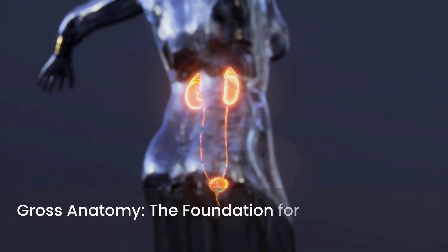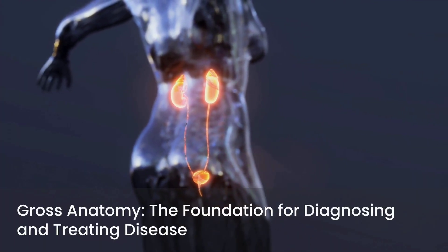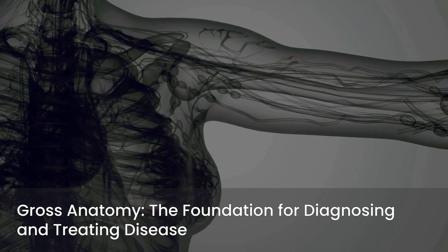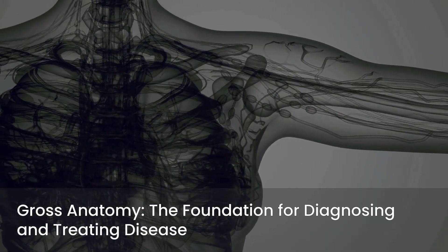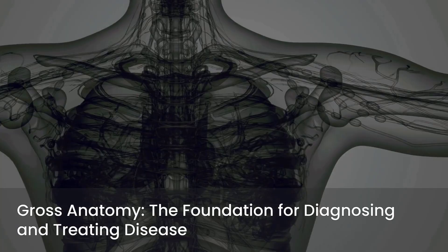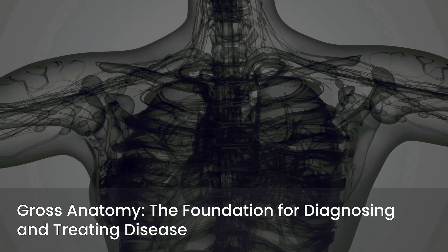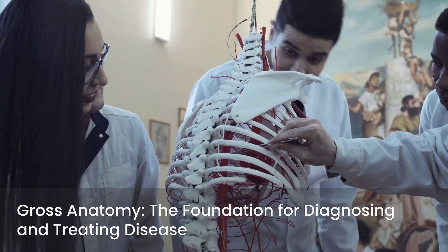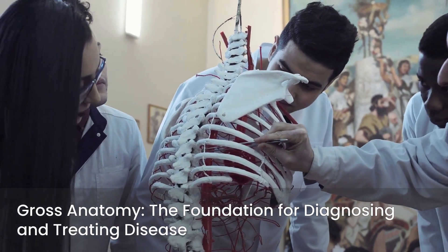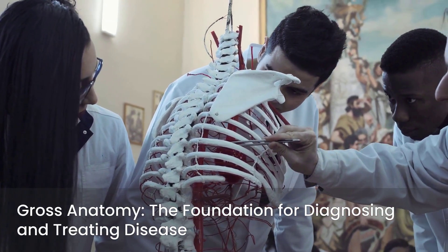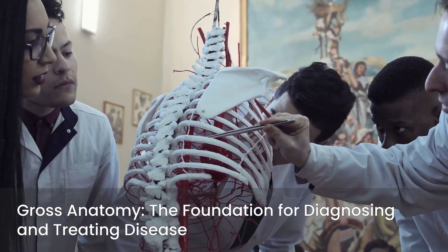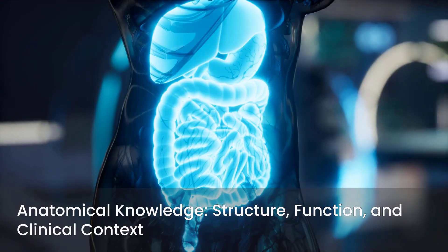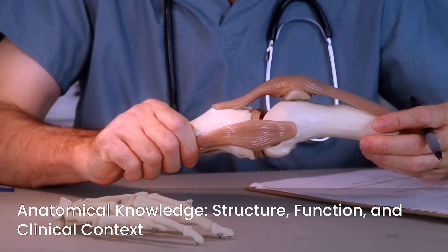Gross anatomy is the study of the human body's structures that are visible to the naked eye or can be palpated. This includes bones, muscles, organs, vessels, and nerves, all organized into complex systems and regions. For Step 1, understanding these structures is paramount, as they form the basis for diagnosing and treating disease. The Step 1 exam frequently tests your ability to identify structures and understand their functional relationships.